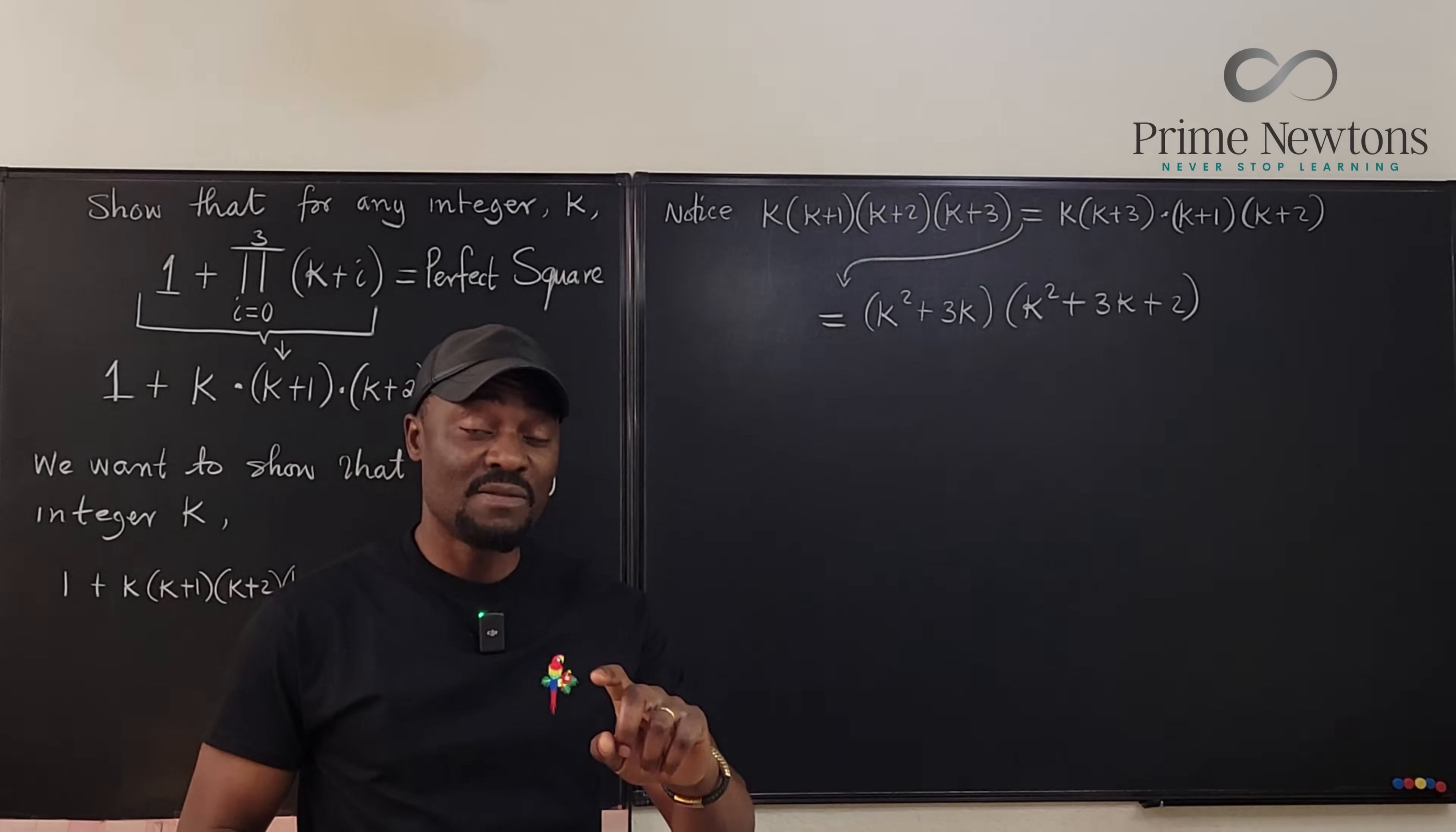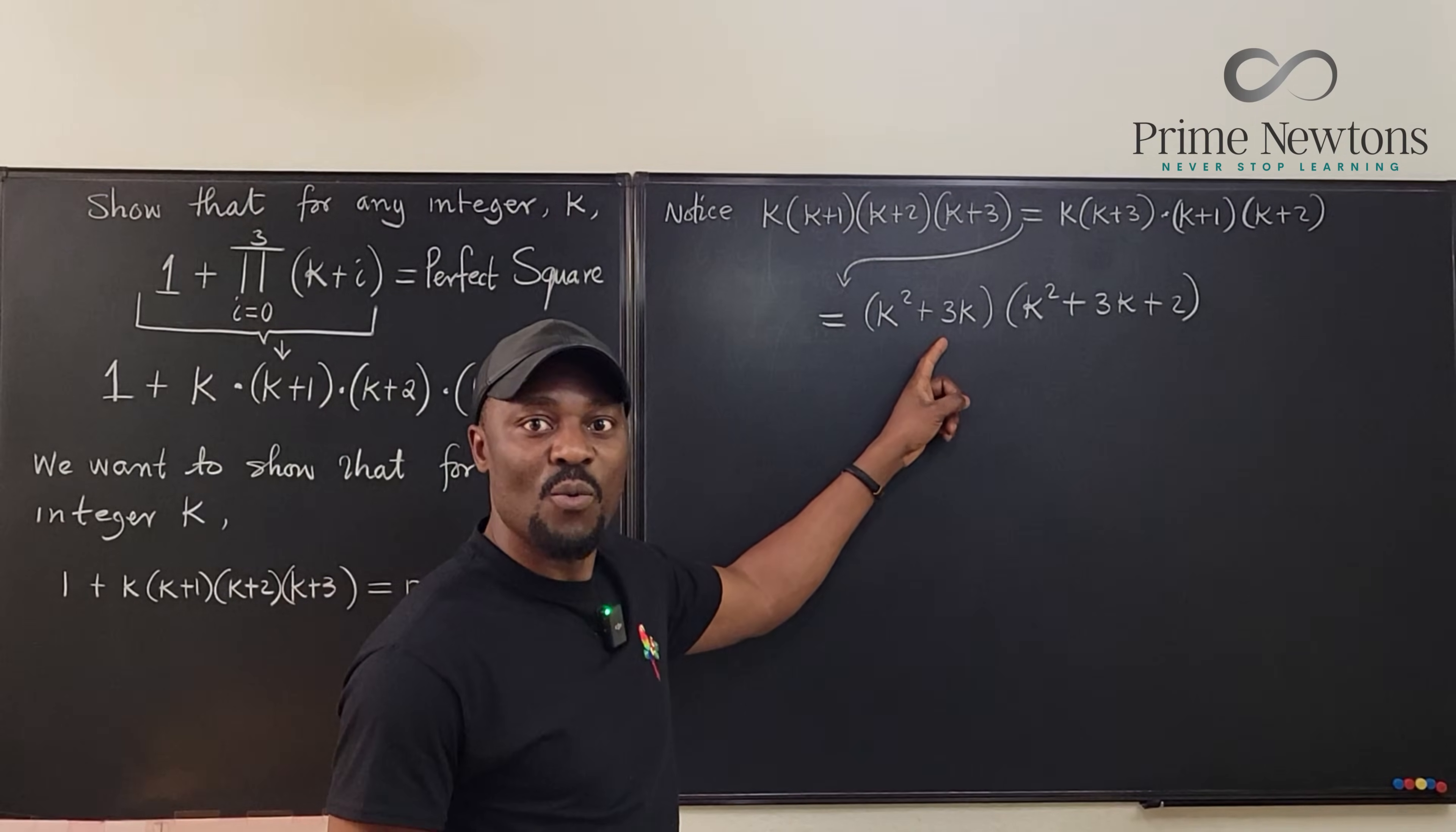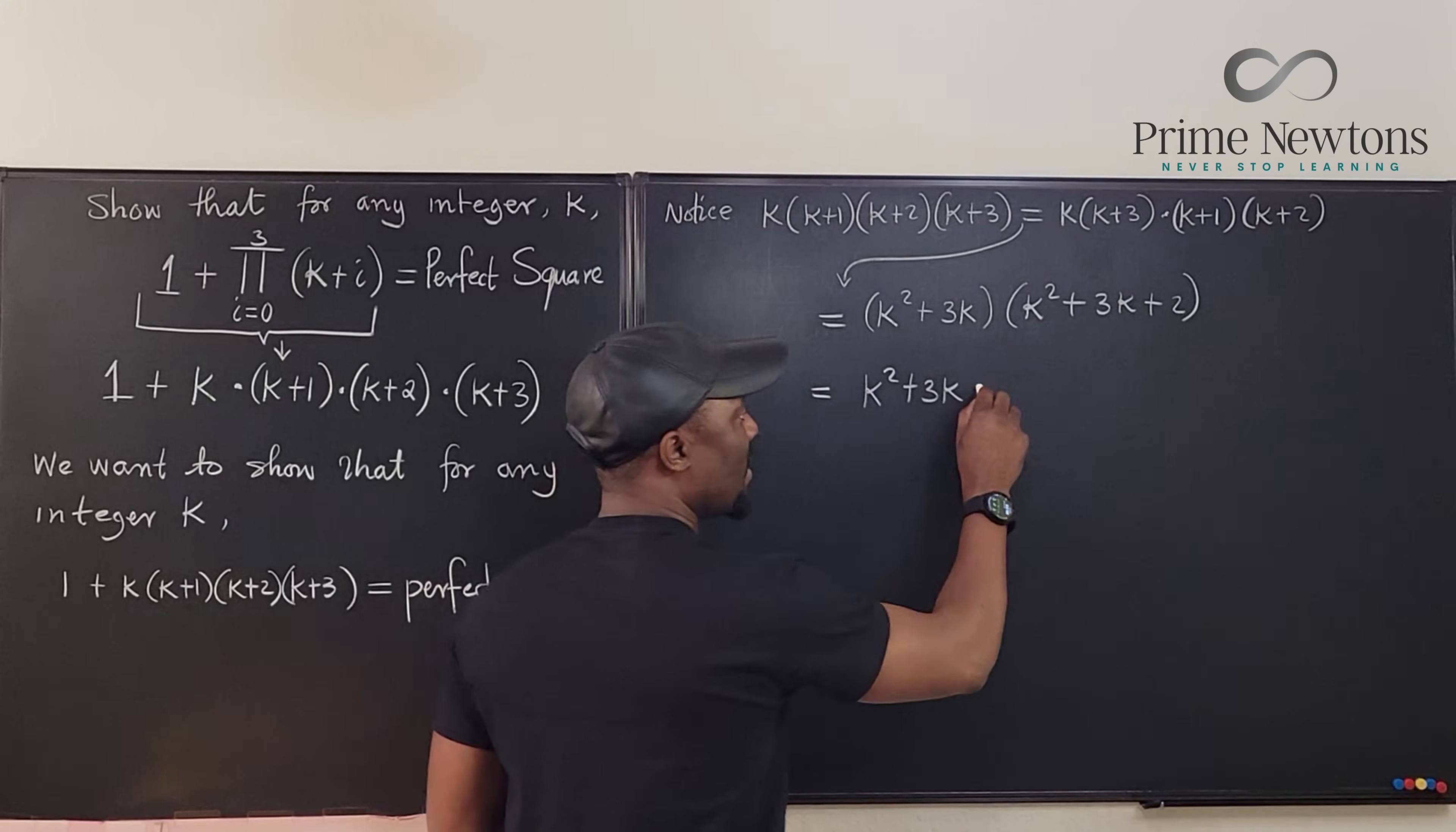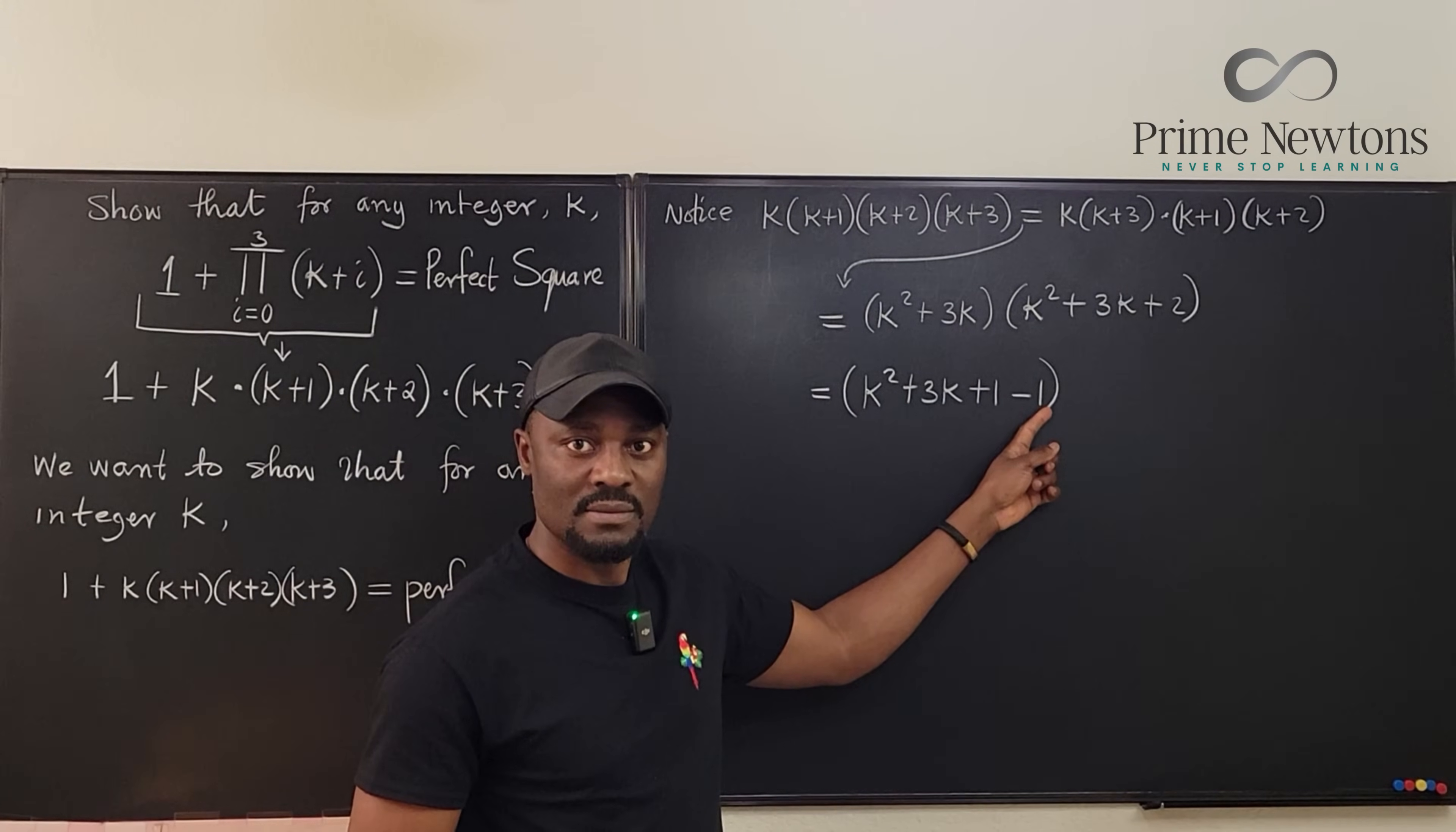What you're looking for is a perfect square or something that looks like a perfect square. And you can do that here. Remember, one is your friend because one is always a perfect square. You have to try to generate one here. And this is obvious. Look at what I'm going to do. This is going to be k squared plus three k. Now, I'm going to add one and then subtract one. I have not changed anything. Now I have generated something minus one.